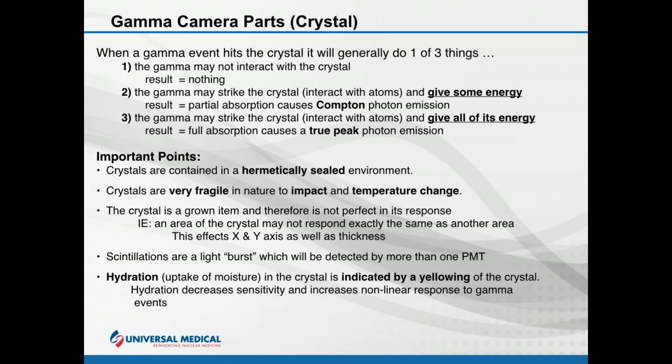When a scintillation or light burst occurs, it will be detected by more than one photomultiplier tube — in theory every tube sees every event, though in reality some outputs will be down in the noise level. Regarding hydration: if a hermetically sealed crystal gets moisture, it causes yellowing of the crystal, which decreases crystal sensitivity and increases nonlinear responses to gamma events. The light isn't as bright because it has to fight through the yellowing, so it responds incorrectly.